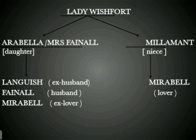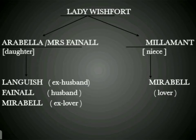Arabella is Lady Wishfort's daughter, and after marrying Mr. Fainall her name was converted to Mrs. Fainall. Throughout this play Arabella is mentioned as Mrs. Fainall. Before marrying Mr. Fainall, she was already married to a man called Languish, but due to his death they were not able to lead a married life for a long time. Languish is not a character in this play — his name is just mentioned as the ex-husband of Arabella or Mrs. Fainall. The central character in this play is Mirabell — Mirabell is Mr. Fainall's or Arabella's ex-lover.